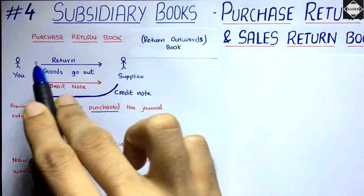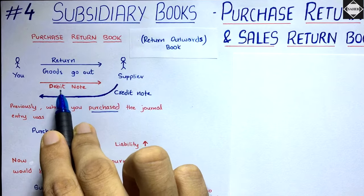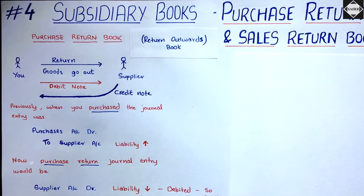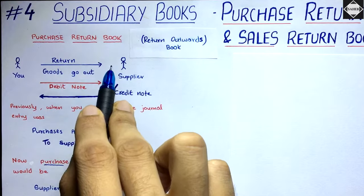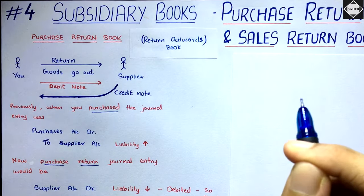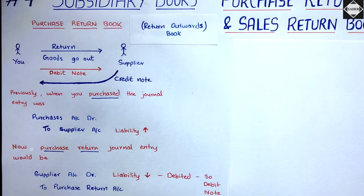Along with the goods you are returning, you will also send out a document to your supplier called a debit note. In the debit note there will be the particulars and all information regarding the goods you are returning, and there is one more significance to this debit note which you can only understand once you understand the journal entry of purchase return.